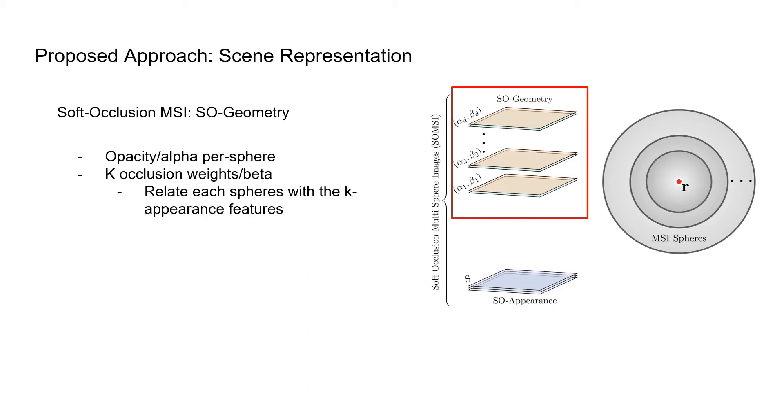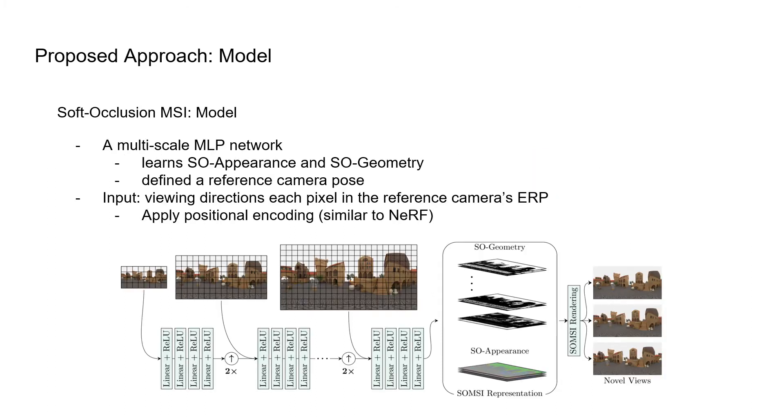Soft occlusion geometry consists of per sphere opacity or alpha and occlusion weight beta. Opacity values alpha are similar to the standard MSI opacities. Occlusion weights or betas measure association between every sphere and the k layers in the soft occlusion appearance. The soft occlusion MSI representation is estimated using a coordinate-based multi-layer perceptron or MLP.